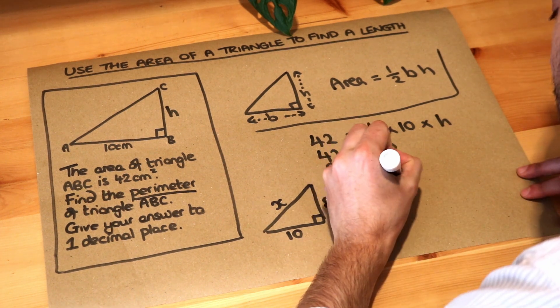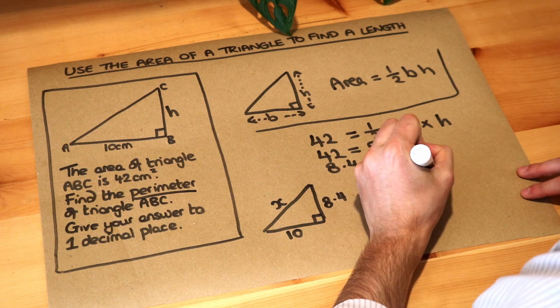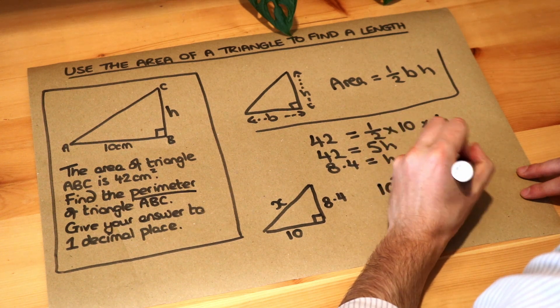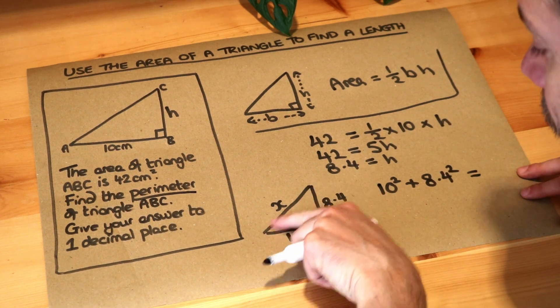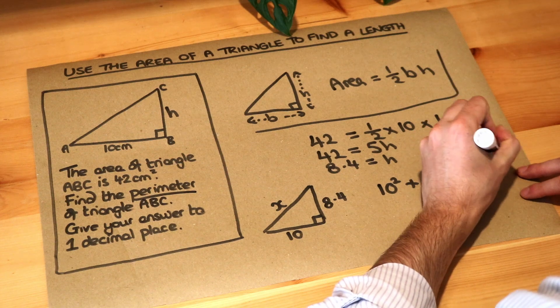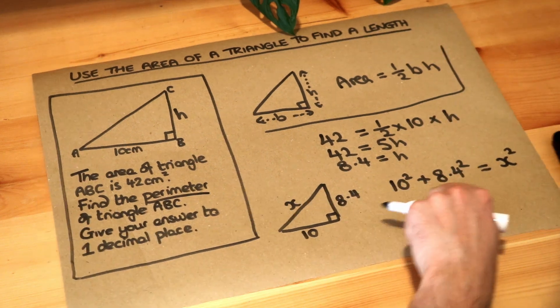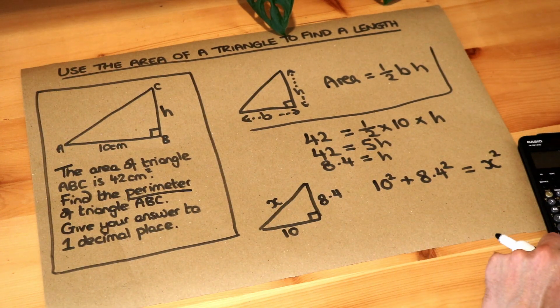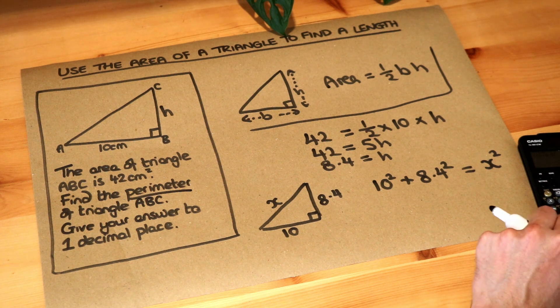one of the shorter length squared, so 10 squared, plus the other shorter length squared, so 8.4 squared, is equal to the longest length, the hypotenuse squared. So now I can just simplify that on my calculator. So it's going to be 100 plus 8.4 squared.